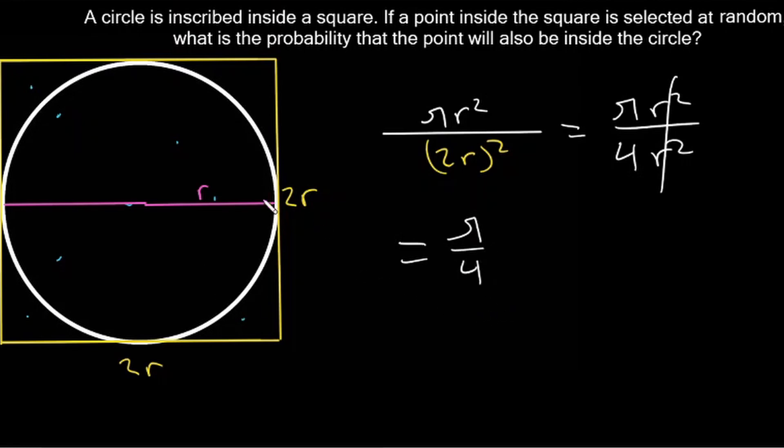So the chance of our random point being inside the circle is pi over 4.